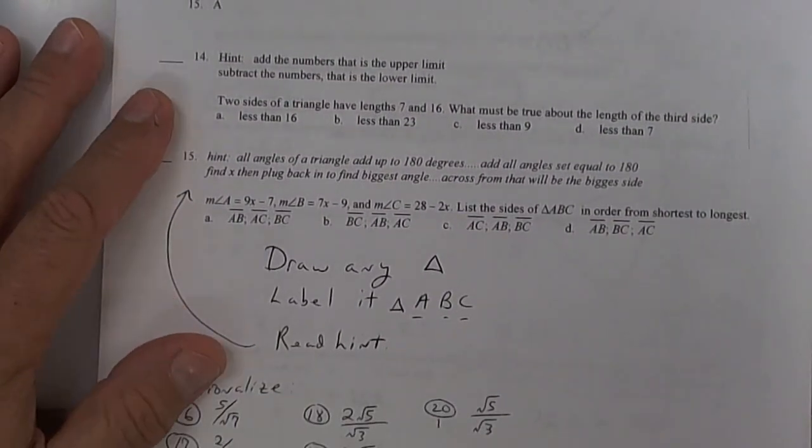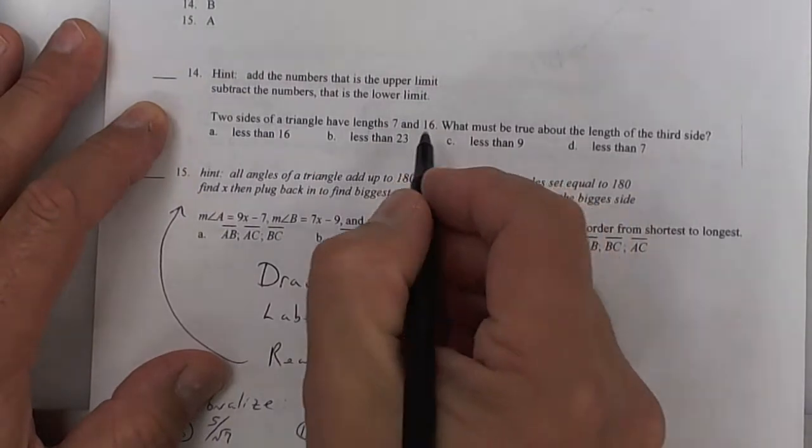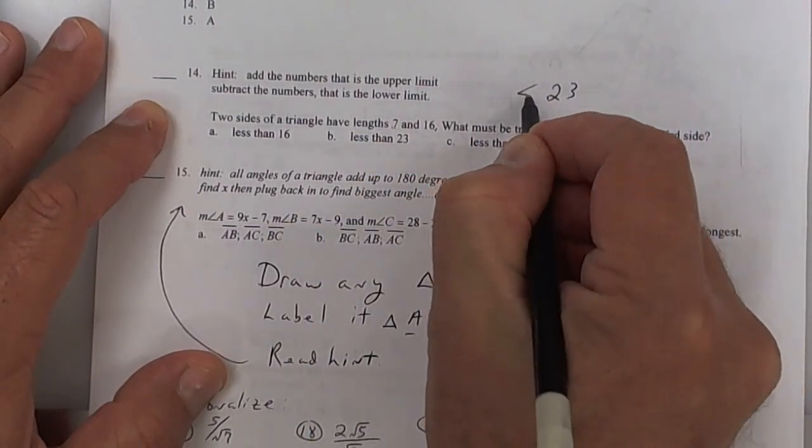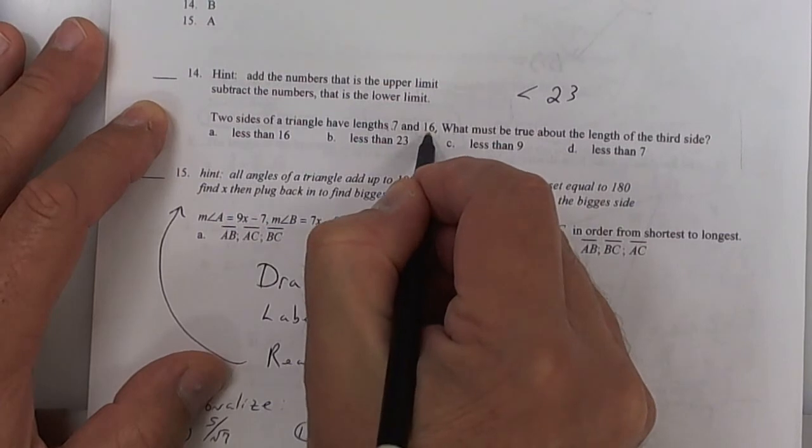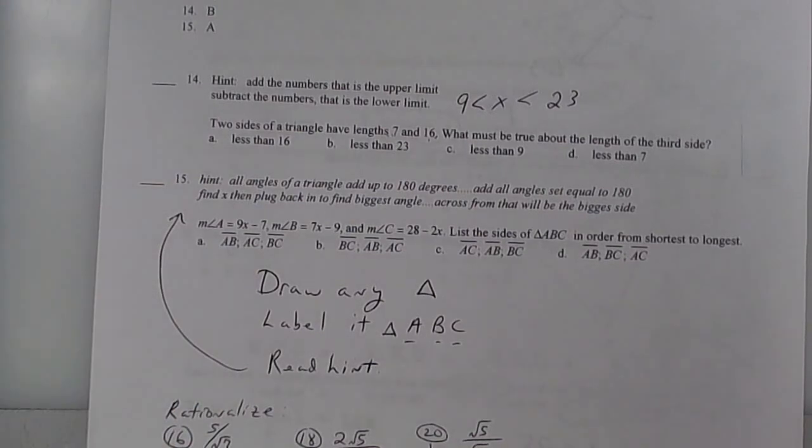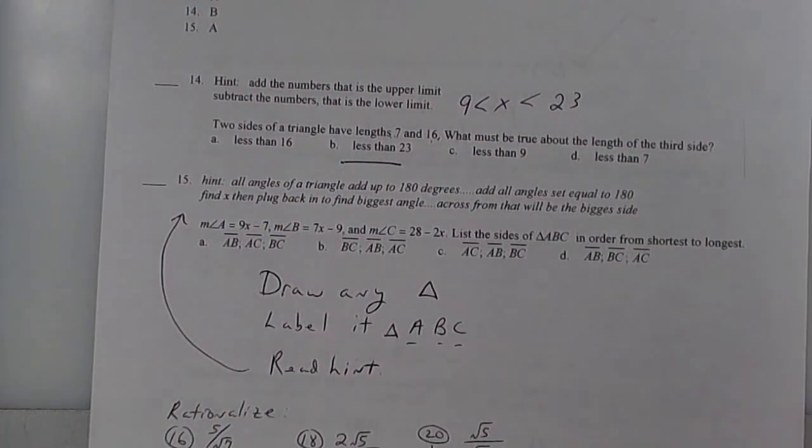All right. Here we go. Same thing here. What must it be? Add these up. I think that's 23. So the upper limit is 23. Subtract these two, and you get, I think it's 9. So it's got to be greater than 9, but less than 23. So here it is. Again, add them up to get the upper limit. Subtract to get the lower limit.